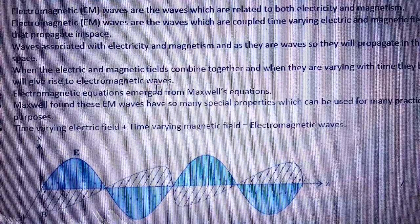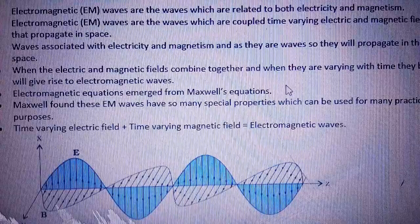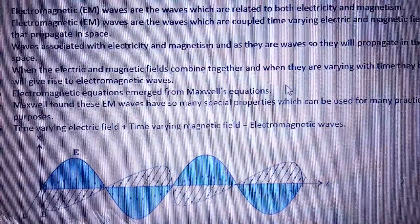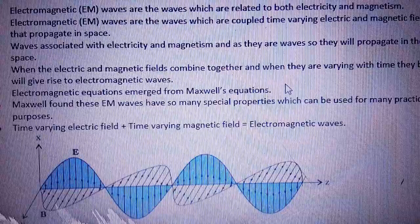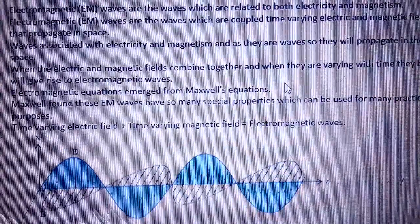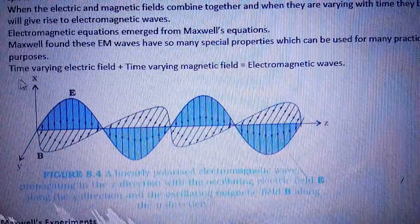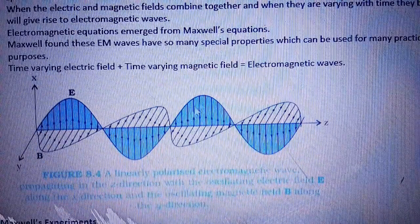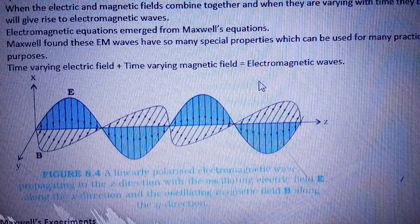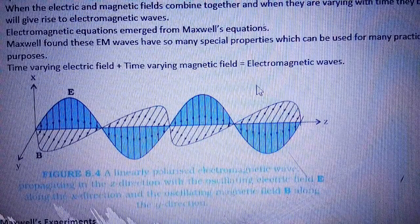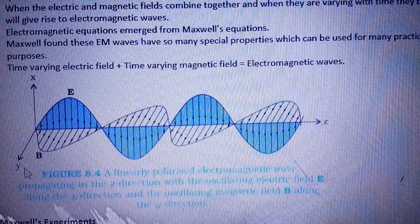Maxwell found these waves through Maxwell's equations. Maxwell found that these waves have so many special properties which can be used for many practical purposes. Here, a time-varying electric field plus a time-varying magnetic field produces electromagnetic waves. Here E denotes the electric field and B denotes the magnetic field.